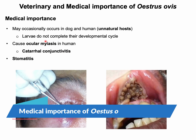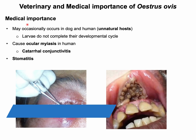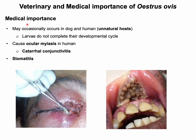Medical importance of Oestrus ovis: Oestrus ovis may occasionally affect dogs and humans. In such cases, larvae do not complete their developmental cycle. Larvae deposited near the eyes cause catarrhal conjunctivitis, and larvae deposited around the lips may result in stomatitis in humans.